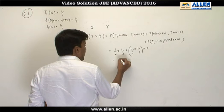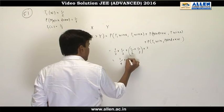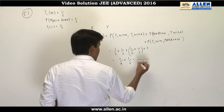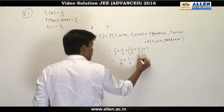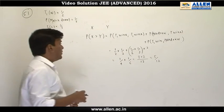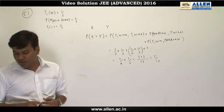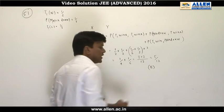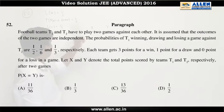So this is going to be 1 upon 4 plus 1 upon 6. So this is 12 is the same, and this is 3 plus 2 is 5. So the answer for 51 part is 5 upon 12, which is given in option B, and the correct answer for 51 is B.